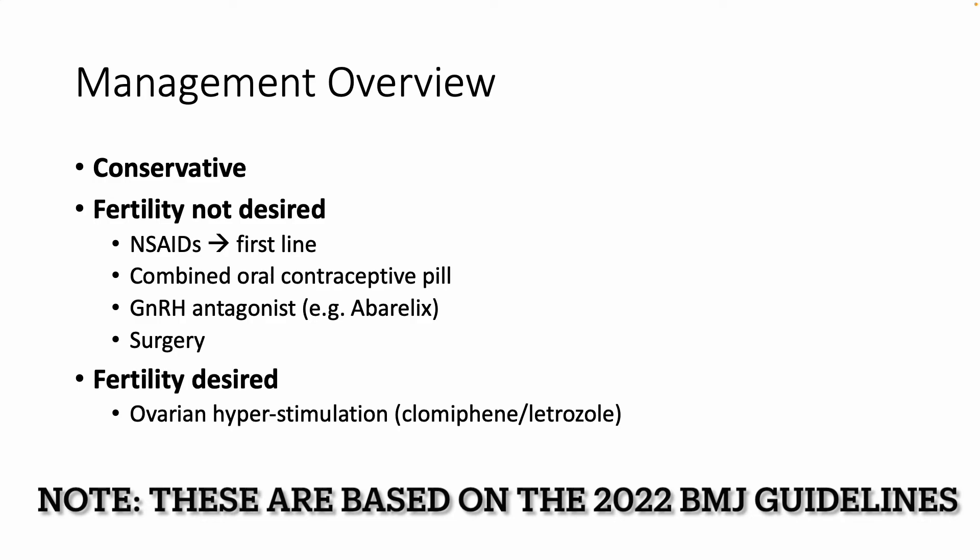But if the patient does not want to have children or has completed their family, you can either go with the combined oral contraceptive pill or NSAIDs for the first line — things like ibuprofen. But if those don't work, you can use something like a GnRH antagonist such as Abarelix, or you can go down the surgical route — laparoscopic ablation or a complete hysterectomy — if the disease is very severe.